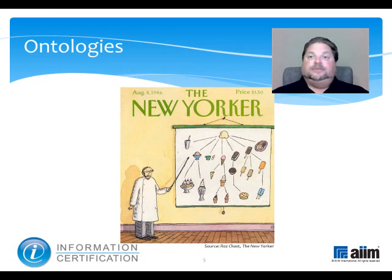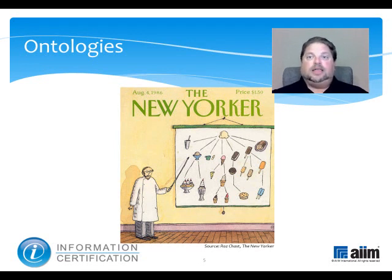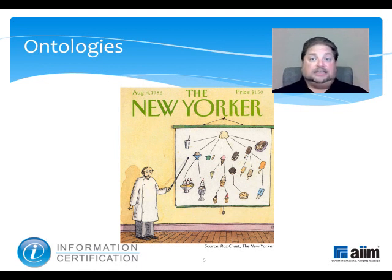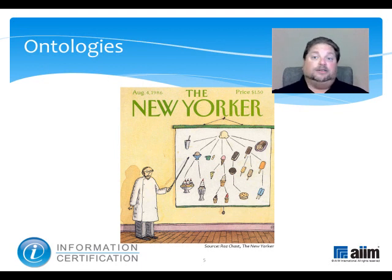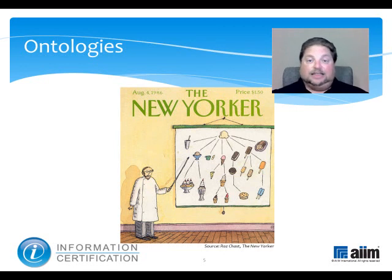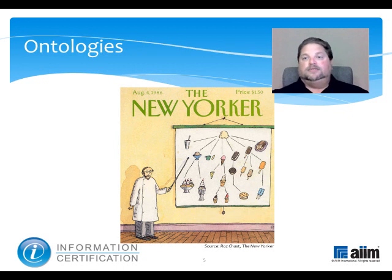A major piece of information organization centers on developing ontologies, which basically apply rules that specify terms, what they mean, and what the relationships are between and among them. As such, they represent domains of knowledge rather than ways to structure a vocabulary, the way their taxonomy cousins do. For example, an ontology for salad would specifically contain the structure for how it relates to all its parts, from the ingredients to the growers to maybe even the rodents that might eat its components in the field.